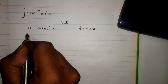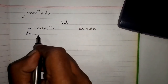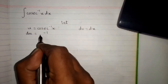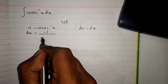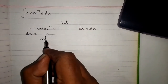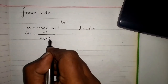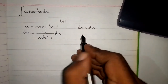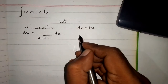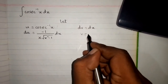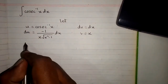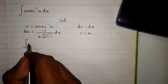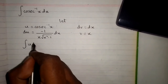The differential du is equal to the derivative of arcsecant inverse x, which is minus 1 upon x times square root of x squared minus 1, dx. Taking the integral of both sides, we have v is equal to x.